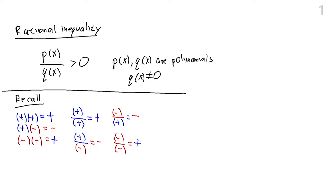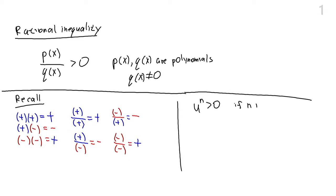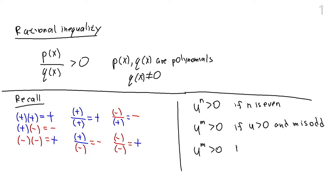Also, the way powers work: if you have some expression to the power of n, it's going to be positive if n is even. If you have some expression to an odd power, it's going to be positive if that expression itself is positive, and negative if the expression is negative. These are the basic facts from real numbers — the same facts we recalled when we did polynomial inequalities.